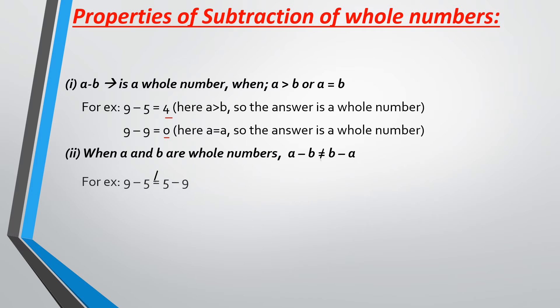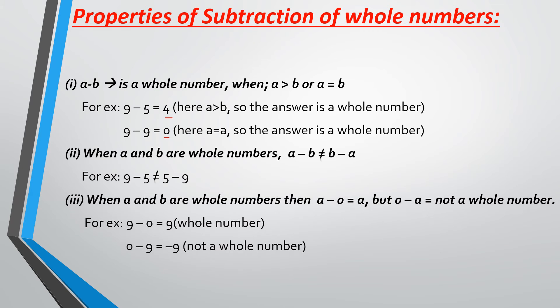The next property states that when A and B are whole numbers, A minus B can never be equal to B minus A. For example, 9 minus 5 is not equal to 5 minus 9 — it gives a totally different answer. The third property states that when A and B are whole numbers, A minus 0 is equal to A, but 0 minus A is not equal to a whole number.